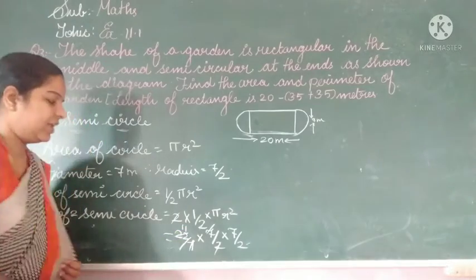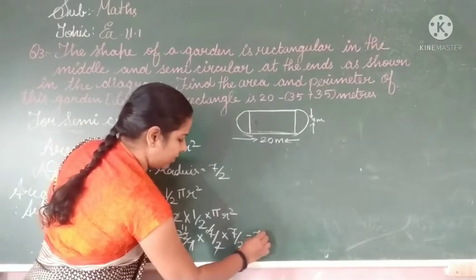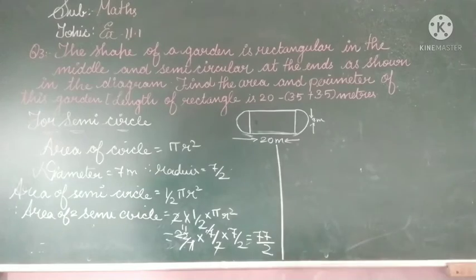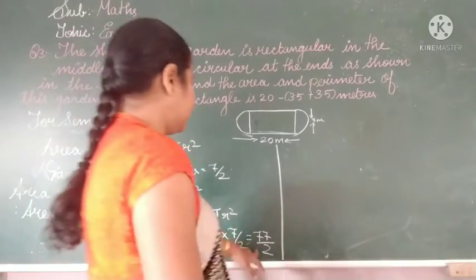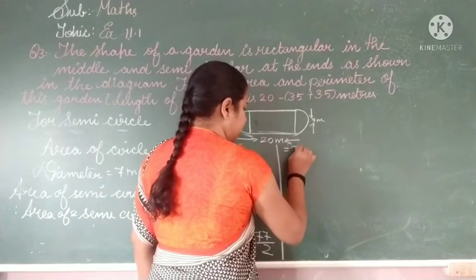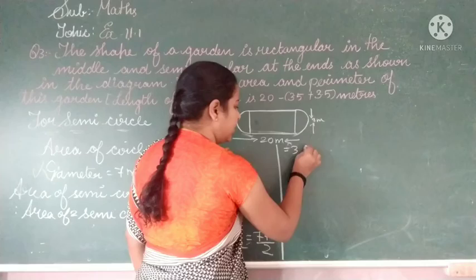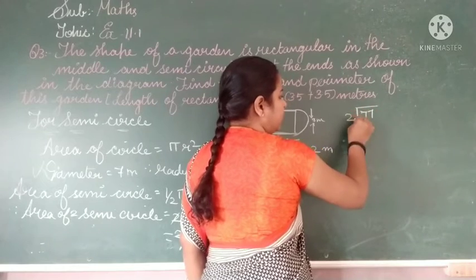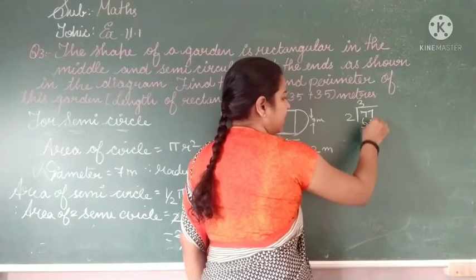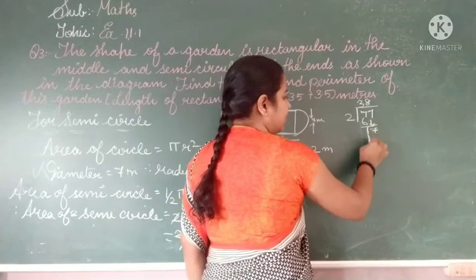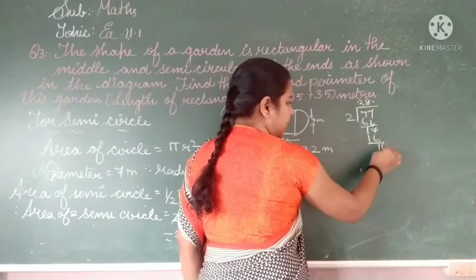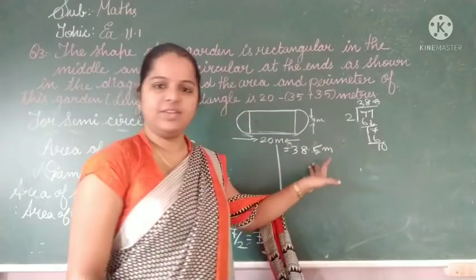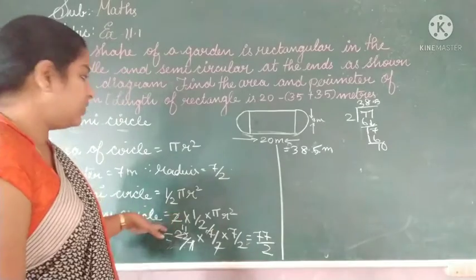After cancellation, it becomes 77/2. Dividing 77 by 2: 2 threes are 6, remainder 1; bringing down 7, 2 eights are 16, remainder 1, giving 0.5. So the area of two semicircles is equal to 38.5 square meters. In this way, you find the area of the semicircle.